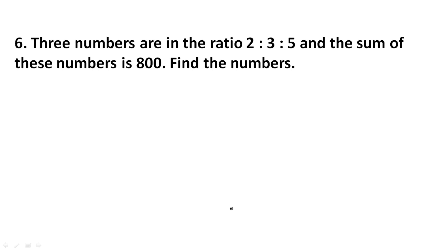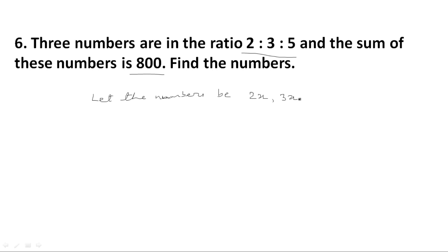Question number 6: Three numbers are in the ratio 2 is to 3 is to 5, and the sum of these numbers is 800. Find the numbers. Let the three numbers be 2x, 3x, and 5x. It is given in the question that their sum is equal to 800.